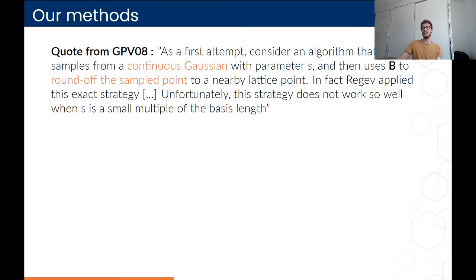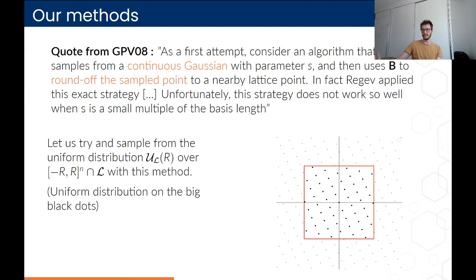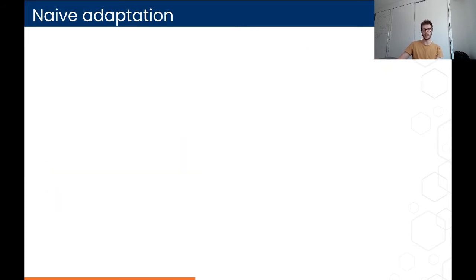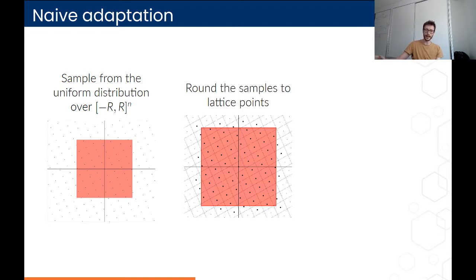Increasing the standard deviation decreases the error, but asymptotically it doesn't work so well for Gaussian distributions. Now let's see what happens using this exact method to sample from the uniform distribution on the lattice restricted to a hypercube. The naive adaptation: first sample from the continuous uniform distribution over the hypercube of radius r, then round the samples. The support of the distribution you get is the black dots, but as you can see, there are black dots outside of the hypercube.